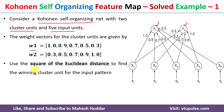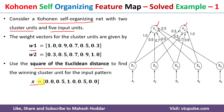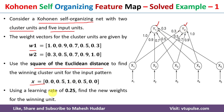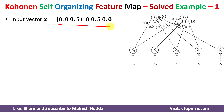We need to use the square of Euclidean distance to find the winning cluster for the input pattern. The input pattern is given to us; we need to identify the winning cluster between Y1 and Y2, using the learning rate alpha equal to 0.25. The input vector consists of five components.